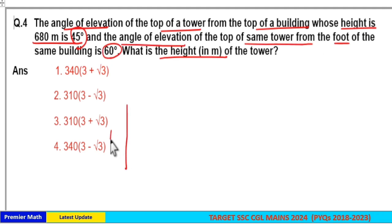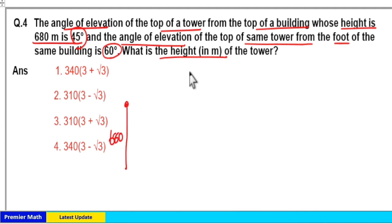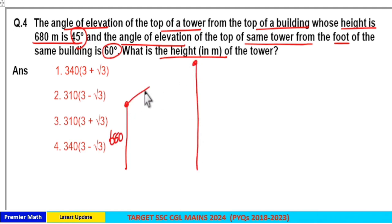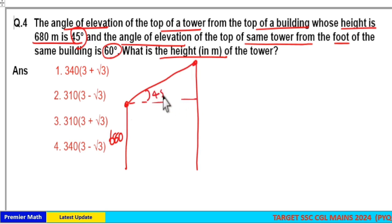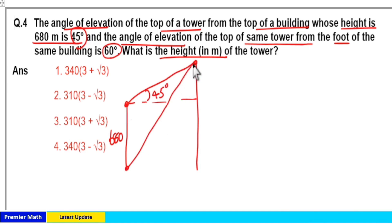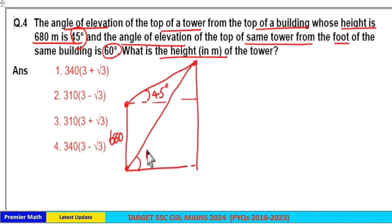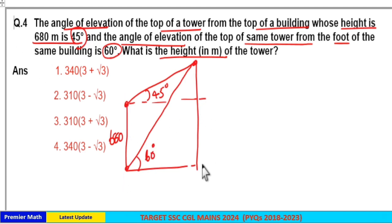The height of the building is 680 meters. From the top of the building to the top of the tower, the angle of elevation is 45 degrees. From the foot of the building to the top of the tower, the angle of elevation is 60 degrees. Since the building height is 680, this corresponding horizontal level is also 680.